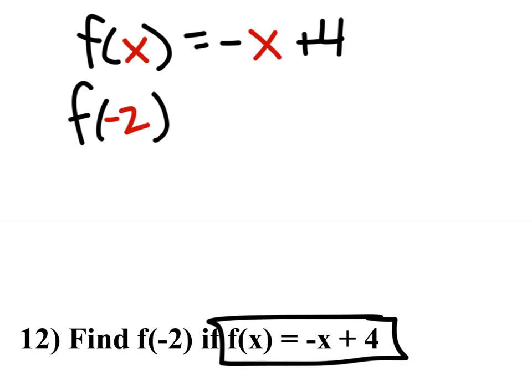Instead of x, it's negative 2. So see where x is? I'm just going to replace the x with a negative 2. Everything else stays the same.